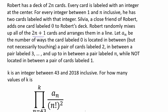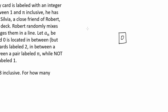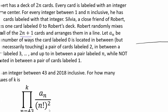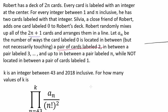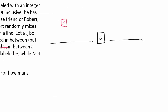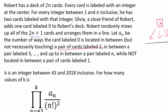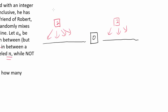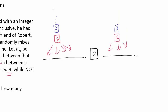So we know we are going to have the card labeled 0, with a bunch of cards to the left and a bunch to the right. We know 0 has to be in between a pair of cards labeled 2 — so one card labeled 2 on the left side and one on the right side. The same applies for the pair labeled 3, and all the way up to the pair labeled n.